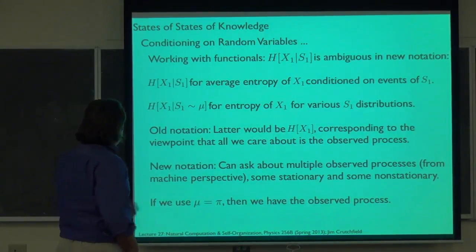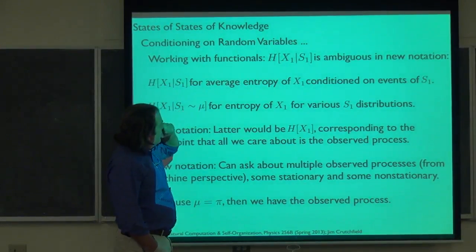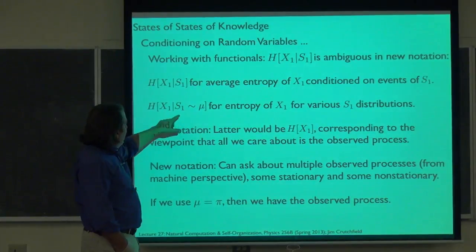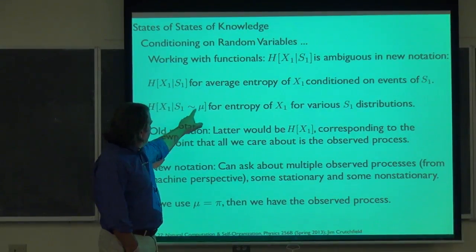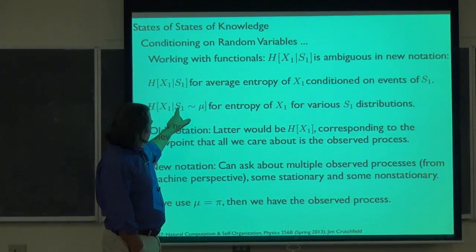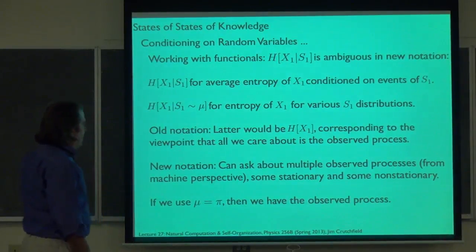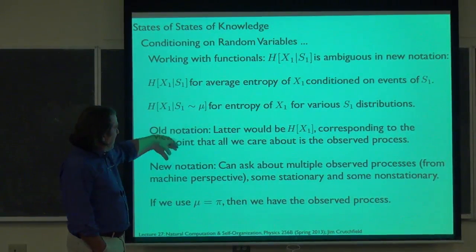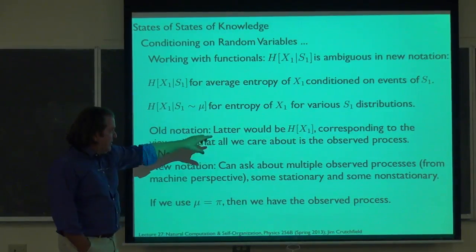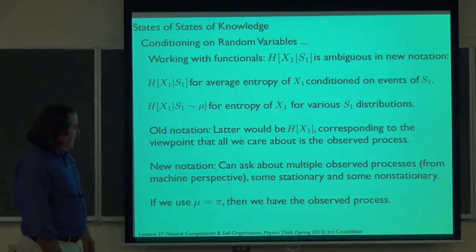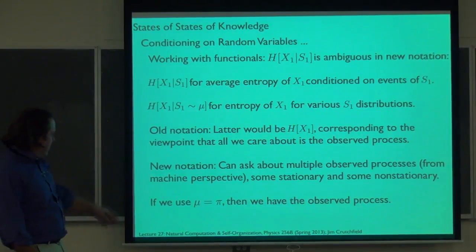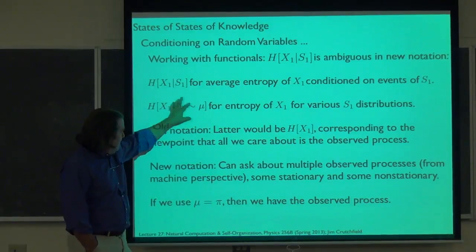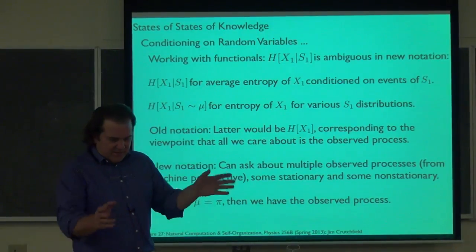When we want to talk about averaging over particular distributions, we'll put in how the conditioning random variable is distributed. We recover, when mu equals pi, the quantities we were using before — namely the asymptotic invariant measure. The important thing is that now we can start looking at how uncertainty changes if we start with different state distributions. In particular, we're going to be updating these distributions as we go along, so we need to be very explicit about the state distributions we're conditioning on.